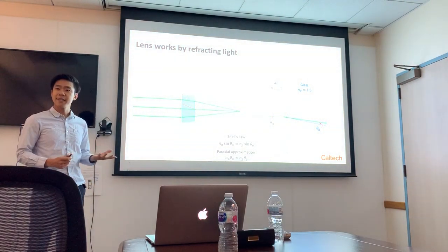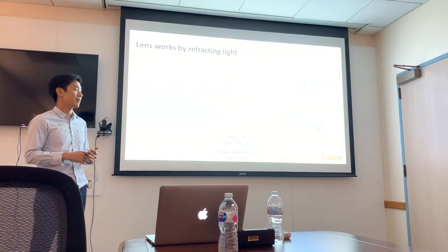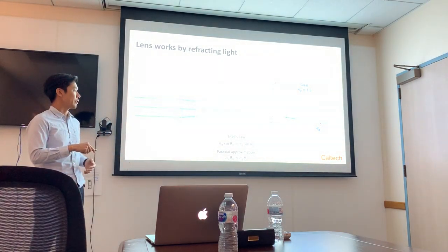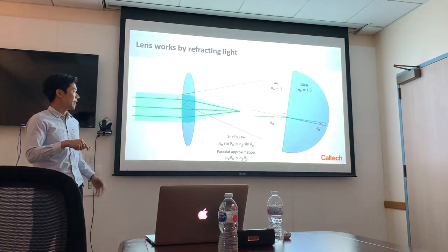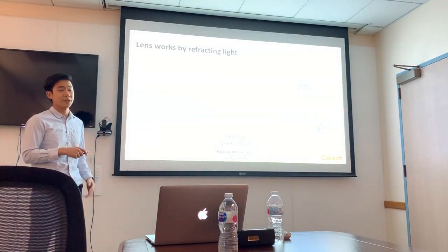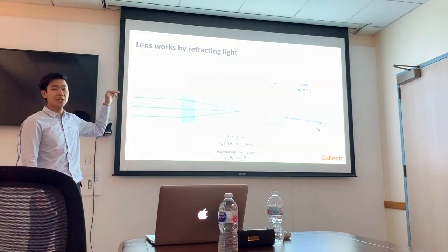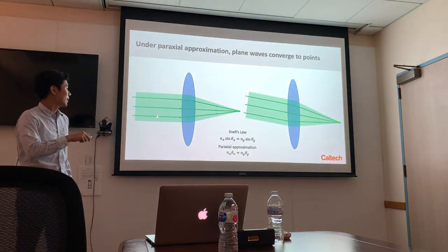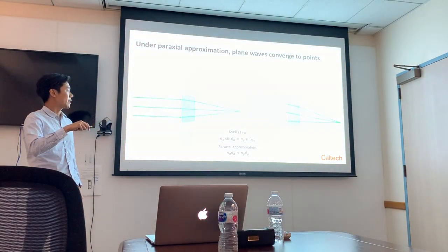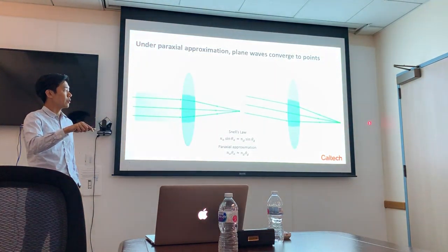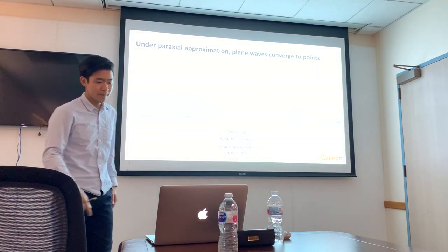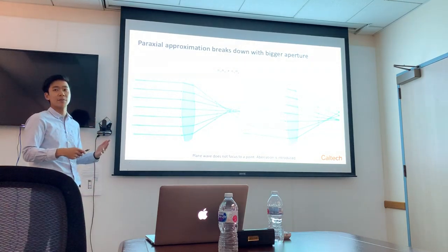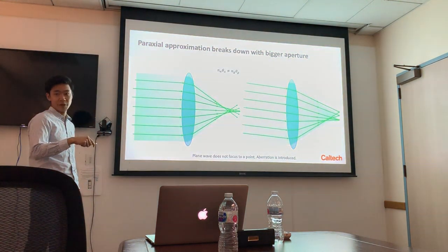A lens consists of glass or plastic elements that have a higher refractive index than the surrounding media. It focuses light by refraction, according to Snell's law. In imaging systems, we make the paraxial approximation, where the incidence angle is small enough such that you have a linear relationship from the input angle to the output angle. This means a beam normal to the lens focuses at a point on the optical axis, and a tilted beam focuses to a laterally shifted point. But when you have an incident beam with a big aperture, the paraxial approximation breaks down, and you get aberration in your imaging system.